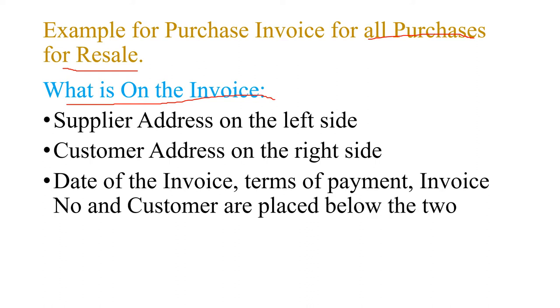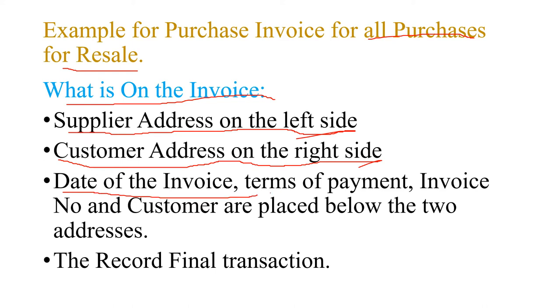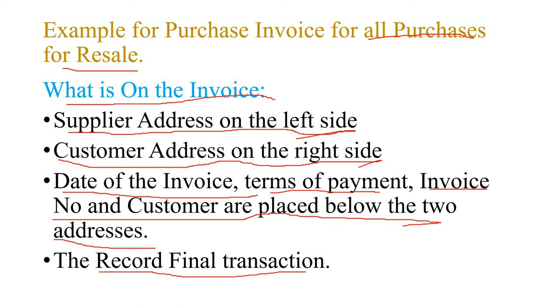What is on the invoice? You have to record the supplier and supplier address on the left side, and you record the customer address on the right side. The next thing is to record the date on the invoice, the time of payment, the invoice number, and the customer number.